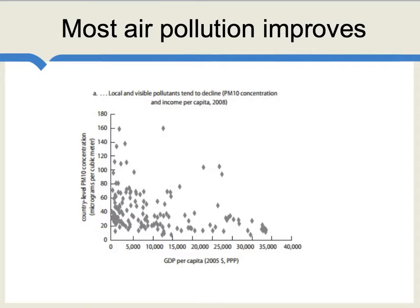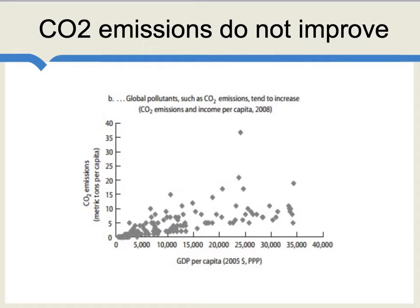As economic growth proceeds, a lot of air pollution problems become less serious. If we look at what are called local and visible pollutants, we find that as nations become wealthier, on average, their local and visible pollutants are decreasing. You can think of the poorer countries as needing to burn dirtier fuels, or having more indoor air pollution, or just not having the resources to improve or clean up their air. There's also plenty of evidence that wealthier nations have cleaner water supplies.